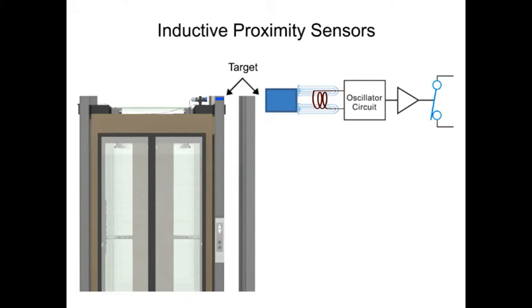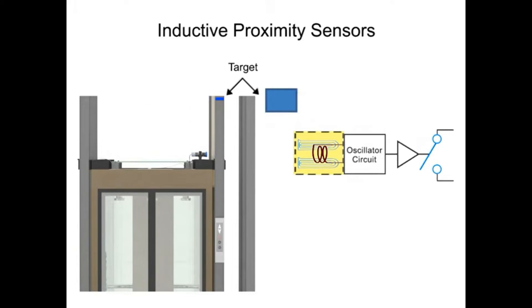This change in amplitude sends a signal to the switch, changing it to its normally open or normally closed configuration, respectively. When the metal target is removed from the sensor's range, the oscillator will return to its normal amplitude and the switch will return to its normally open or closed output.